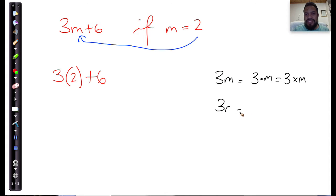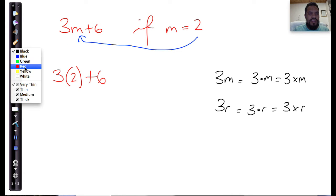If I write 3r, it's exactly the same as 3 dot r, which is the same as 3 multiplied by little r. So let's evaluate this expression. If I were to evaluate this, I'm going to say that that is equal to 3 multiplied by 2 plus 6.